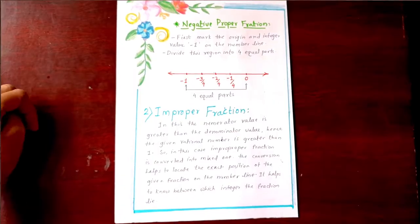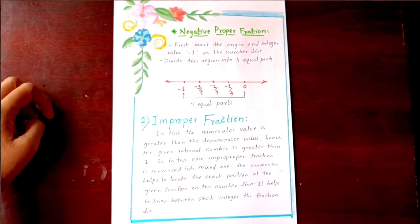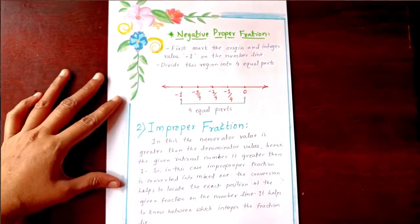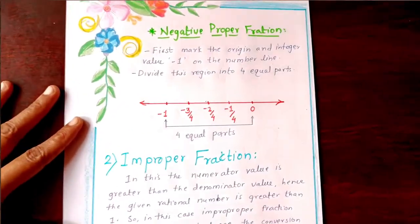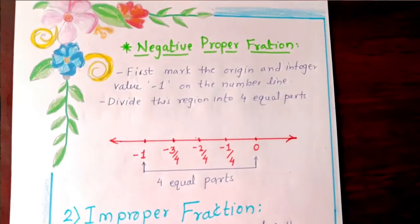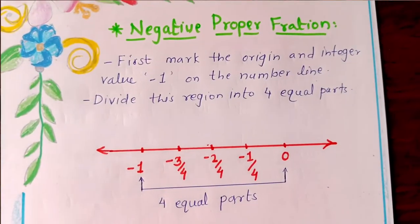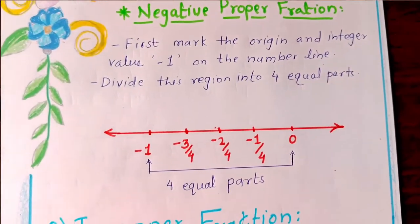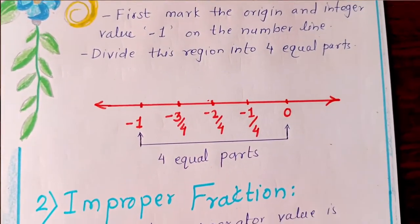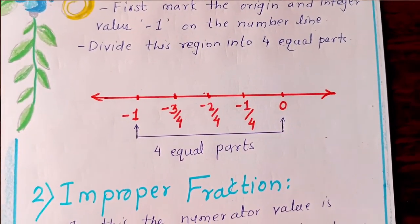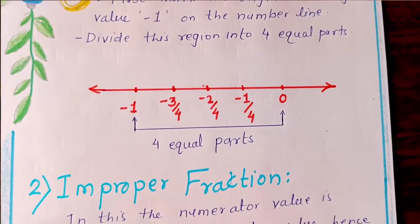After that, negative proper fraction on number line. Here is the description and here is the example of the number line.